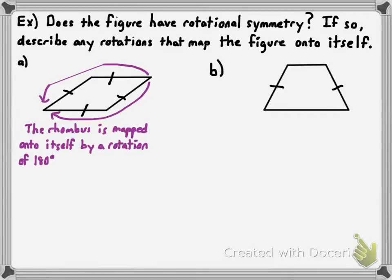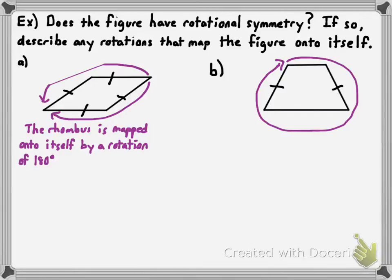What about that isosceles trapezoid? Would it have rotational symmetry? Unfortunately, no. You could try to rotate the figure 180 degrees and you'd see it doesn't look exactly like it did before. You'd have to spin this thing 360 degrees to get it to map onto itself. And if it's any more than 180 degrees that you have to go, it doesn't count for rotational symmetry. So there's no rotational symmetry for this isosceles trapezoid. That's a quick look at reflectional or line symmetry, as well as rotational or point symmetry.